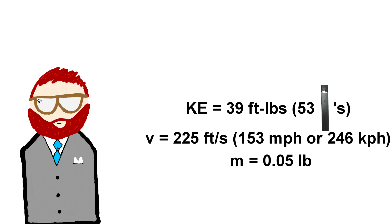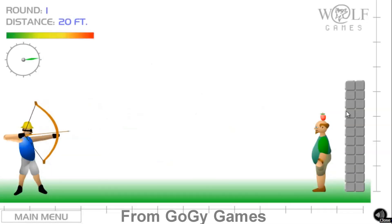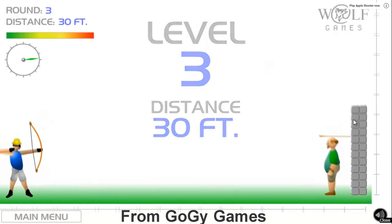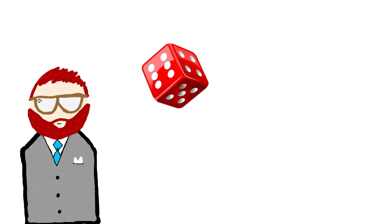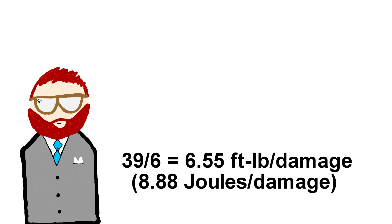Now you might be saying, that's cool, but how does this relate to D&D? This will actually be the basis of the whole theory. An arrow can do 39 foot-pounds of energy, meaning that when you pull back your bow at the right angle you get max velocity — 225 feet per second — and that would be doing max damage. Since an arrow does a d6 of damage, we'll consider 39 foot-pounds to equal 6 damage. With this, we can easily find out how many foot-pounds are needed to cause 1 damage: divide 39 by 6 and you get approximately 6.55 foot-pounds per damage. This gives us a real-world correlation to a D&D mechanic.